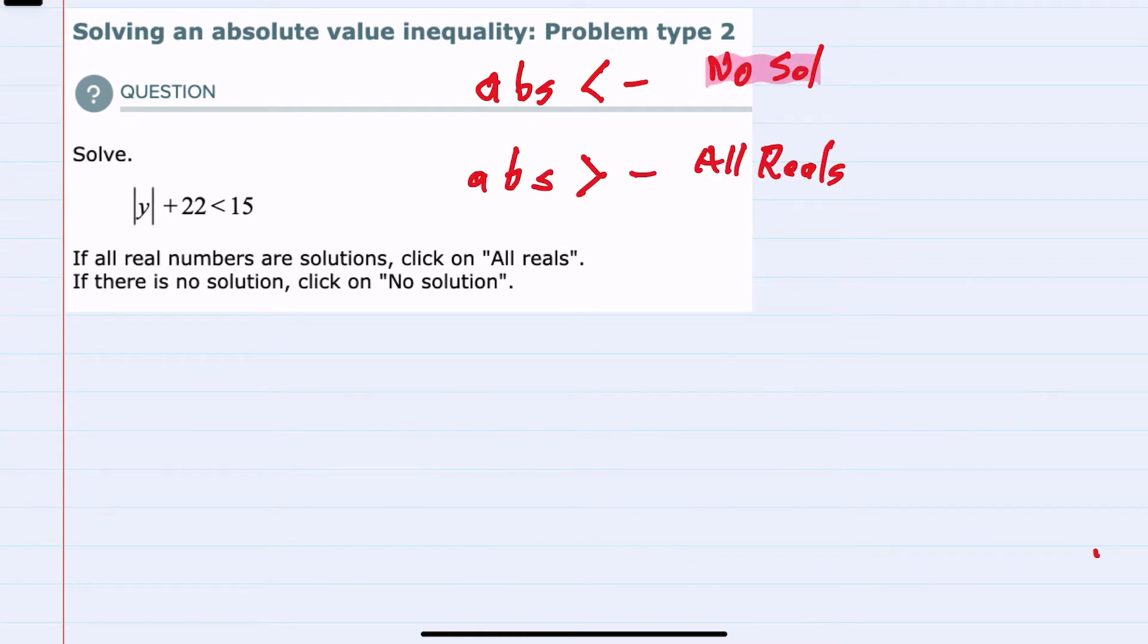Another possibility is that we could have the absolute value greater than a negative, and since absolute values are always positive, it's always going to be greater than a negative, so that would be all reals. The two other possibilities are that the absolute value could be less than a positive number.